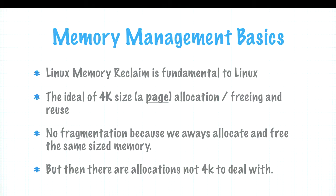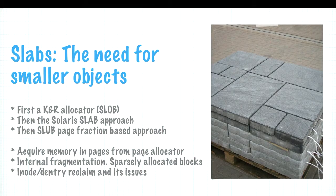If we constrain ourselves to a 4KB I/O size, there is no fragmentation — we can always swap 4KB chunks in and out without losing usable memory. This ideal has guided Linux design for decades. But this idealized world is immediately disrupted by the need for smaller objects, which is why slab allocators exist.